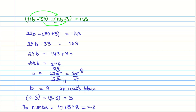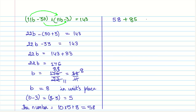Let us verify this solution. The original number is 58. When we interchange the digits, we get 85. Adding: 58 plus 85, we get 8 plus 5 is 13, carry 1, then 5 plus 8 is 13 plus 1 is 14, giving us 143. The solution is correct.